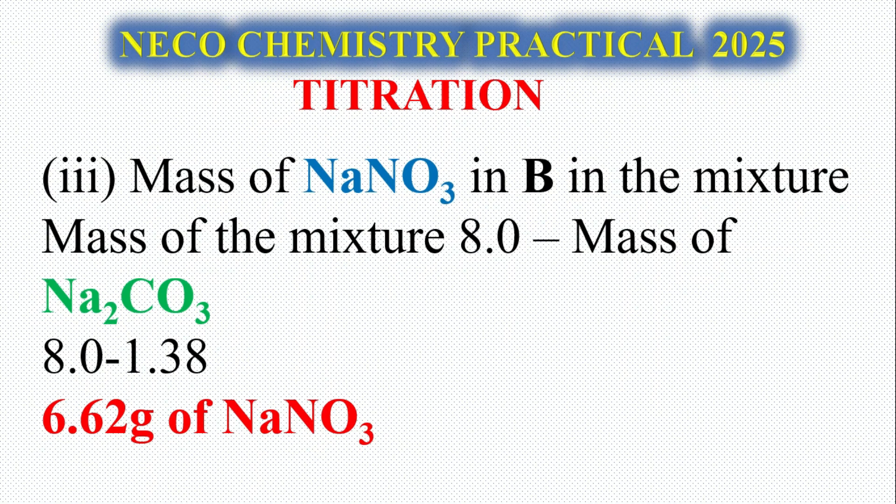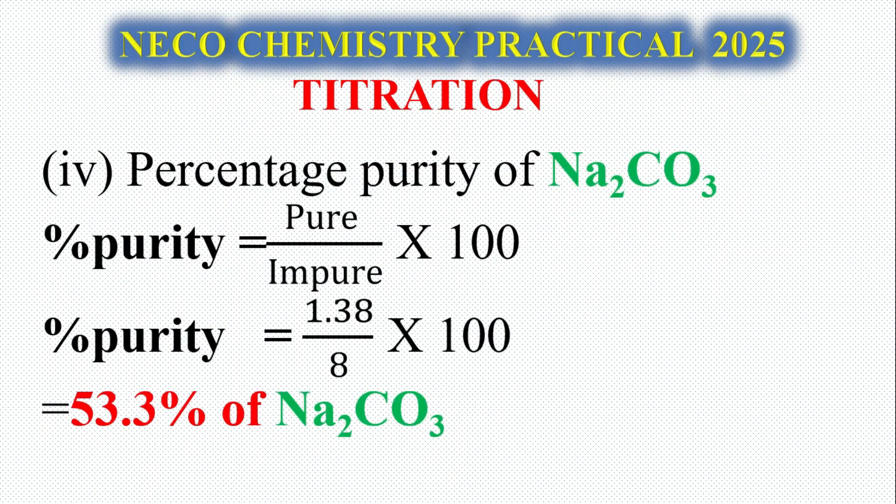Question 3: The mass of NaNO3 in B, in the mixture. The mass of the mixture is 8.0, and mass of Na2CO3 is 1.38. When you subtract that, you get 6.62 grams of NaNO3. Question 4: Percentage purity of Na2CO3. The purity formula is pure over impure times 100. Our purity is 1.38 divided by the total mixture 8, giving 17.25% of sodium carbonate.